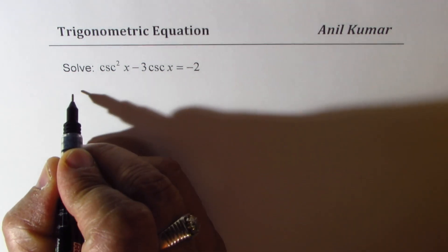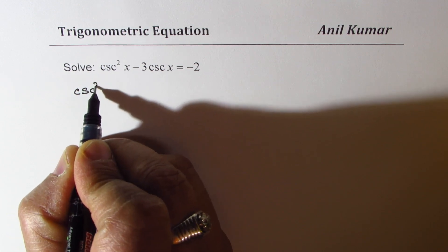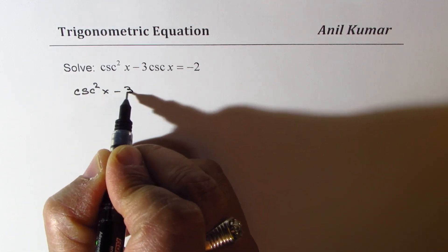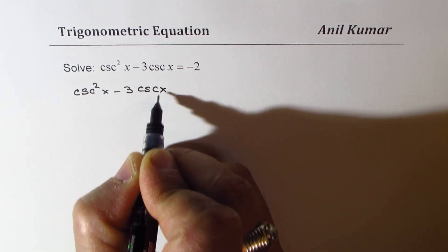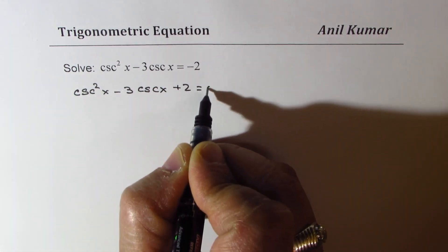So let's rearrange and solve. We get cosecant square x minus 3 cosecant x plus 2 equal to 0.